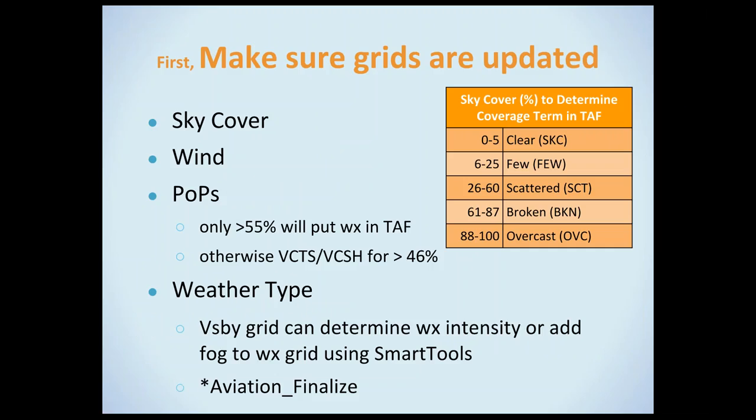When making your TAFs, first make sure your other grids are updated. Get your sky cover up to date — pay attention to the percentages because there's a cutoff at 61% for scattered versus broken. Make sure your winds are up to date. For POPs greater than 46%, that would be mentioned in your TAFs as VCSH. There are other POP rules for prevailing thunderstorms. Your weather type should be determined ahead of time, and there are tools in aviation finalize that will help get your weather in line with your visibility.